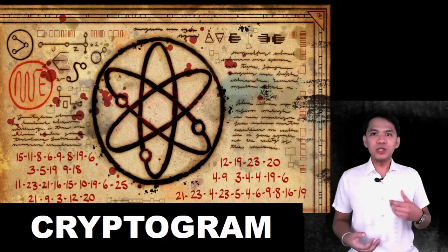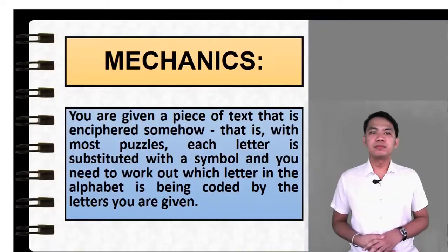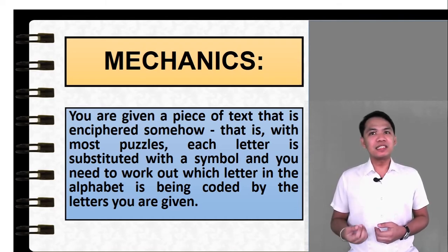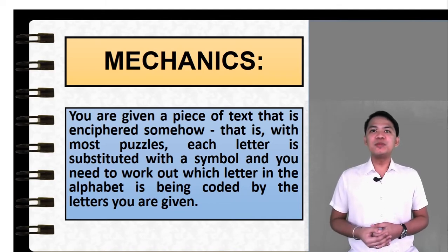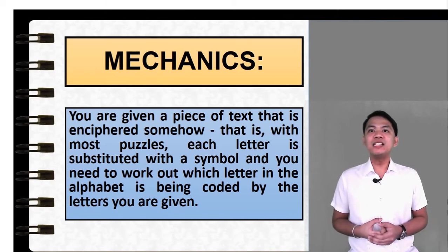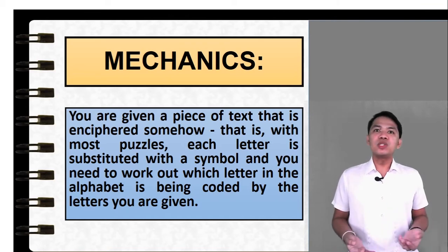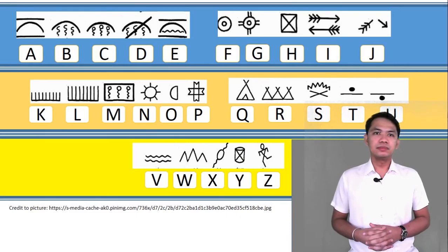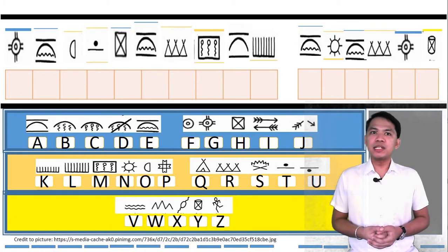Let's begin our today's discussion using the cryptogram coding. Here are the mechanics. You are given a piece of text that is enciphered somehow. Each letter is substituted with a symbol and you need to work out which letter in the alphabet is being coded by the letters you are given. These are the codes with their corresponding letters. For the first word, type your answer in the comment section.